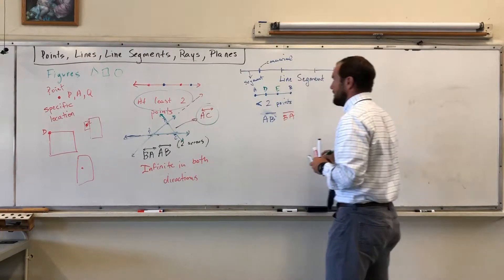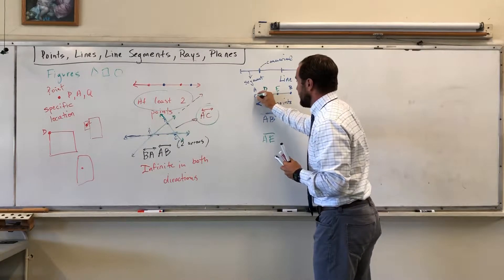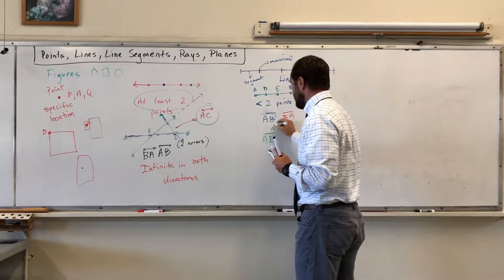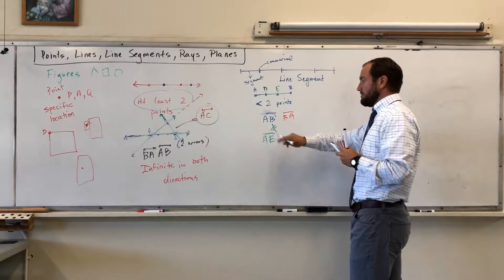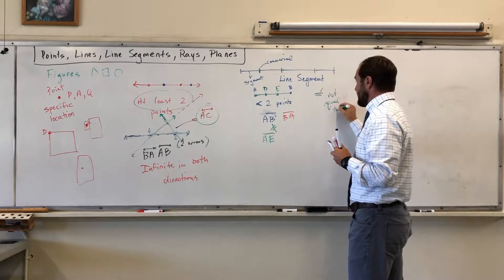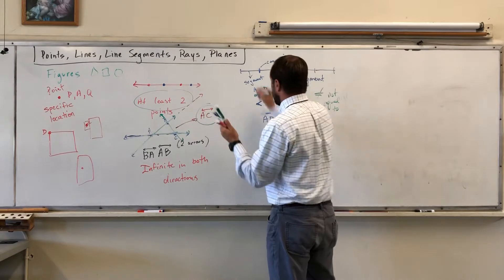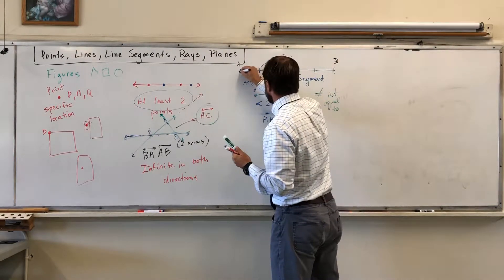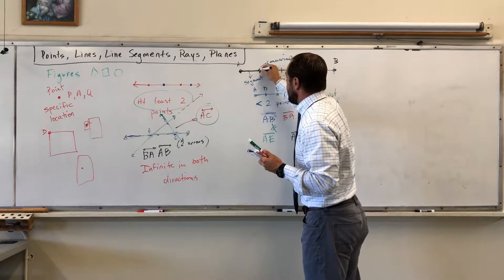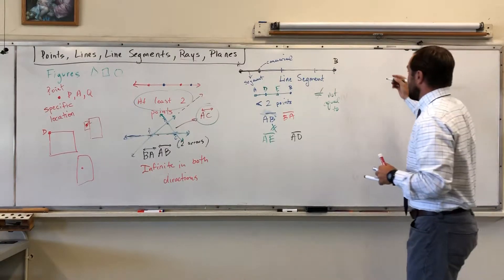Now let's say I add two other points. If I say AB, I'm talking about that segment. But if I say AE, things change because I'm talking about a different start and end — AE is not equal to AB. AB might be the whole TV show, where AD is just the first scene. That's a line segment.